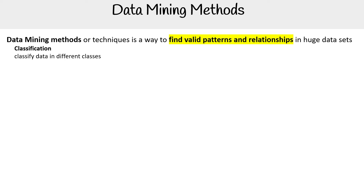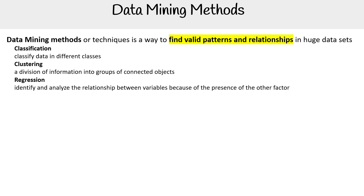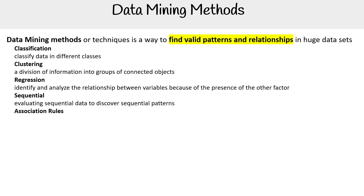We have classification, where you classify data into different classes. We have clustering, a division of information into groups of connected objects. We have regression, which identifies and analyzes the relationships between variables because of the presence of other factors. We have sequential, which involves evaluating sequential data to discover sequential patterns.